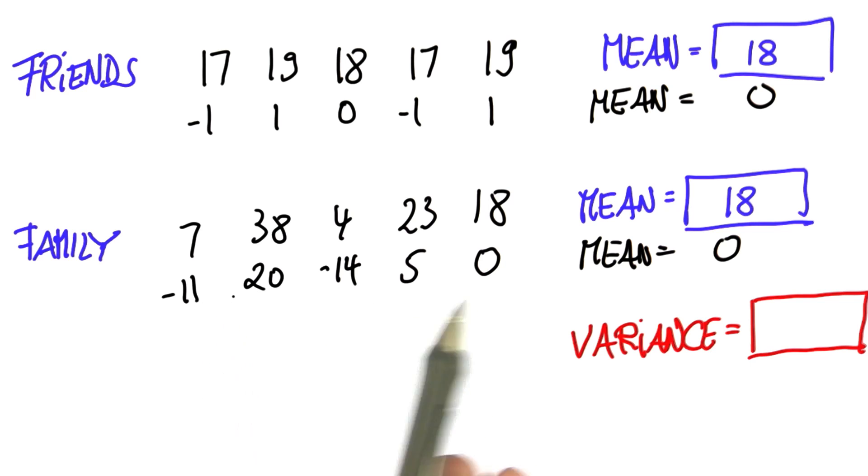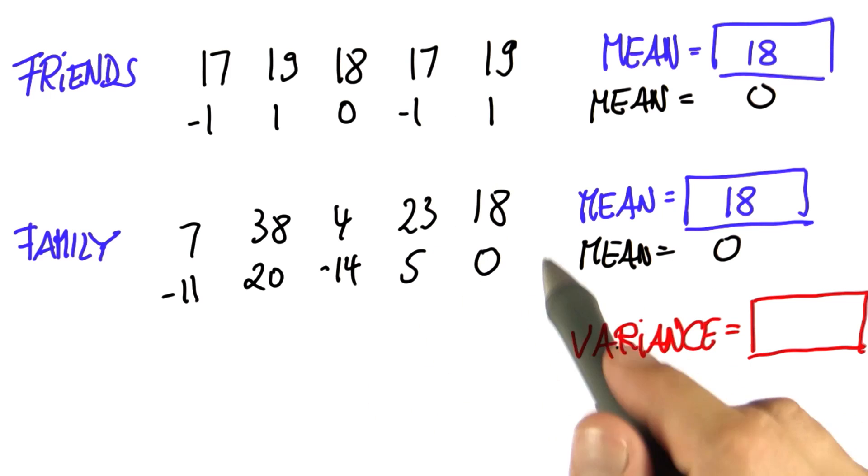Now you might think in computing the variance you just add up all these values and you get a measure of the spread. But the truth is it doesn't work. If you add them up, they are actually 0. So we have to add up something else.